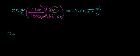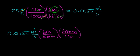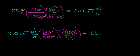The next step is to convert the seconds over to hours. Starting with 0.0155 miles per second, I know there are 60 seconds in one minute, and 60 minutes in one hour. The unit of seconds cancels with seconds, minutes cancels with minutes, and the remaining unit of time is hours. Multiplying 0.0155 × 60 × 60 gives a final answer of 55.9 miles per hour.